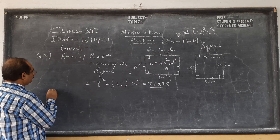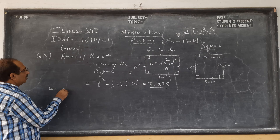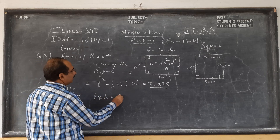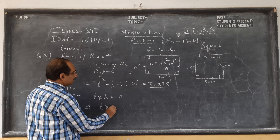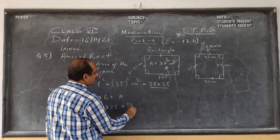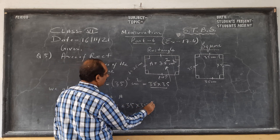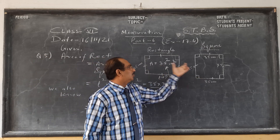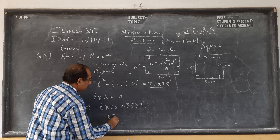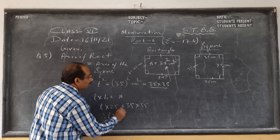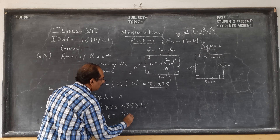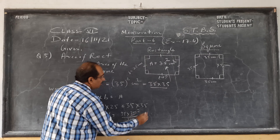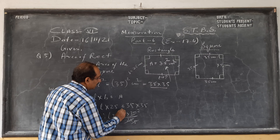Area of rectangle is length into breadth. We also know that area of rectangle is length into breadth. Length we don't know, breadth is given as 25, and area is 35 into 35. So L into 25 equals 35 into 35. So let the length be L. Therefore, 25 will go to the denominator. If we cancel — 5 fives are 25, 5 sevens are 35, 5 sevens are 35.